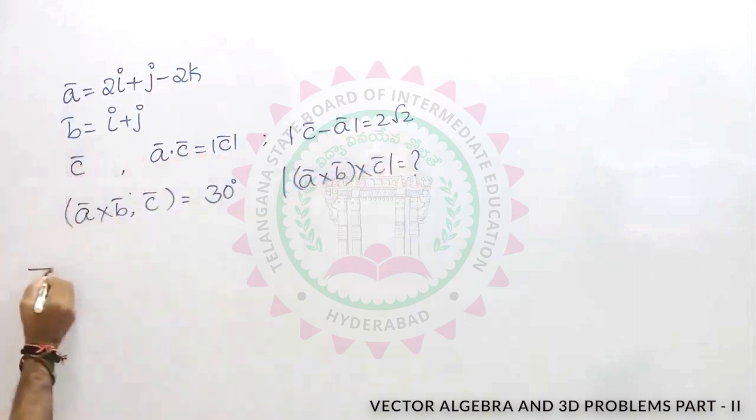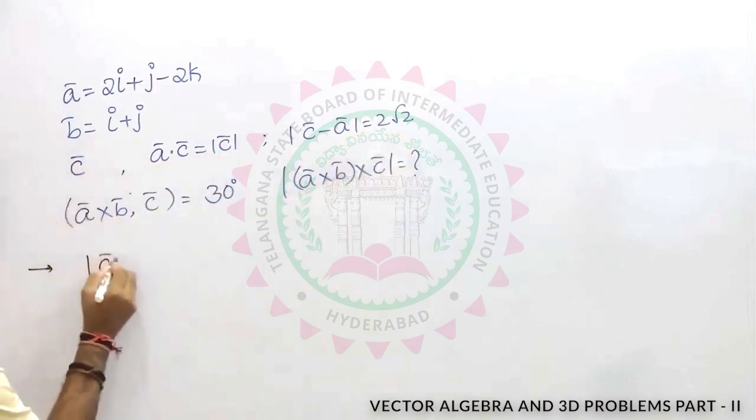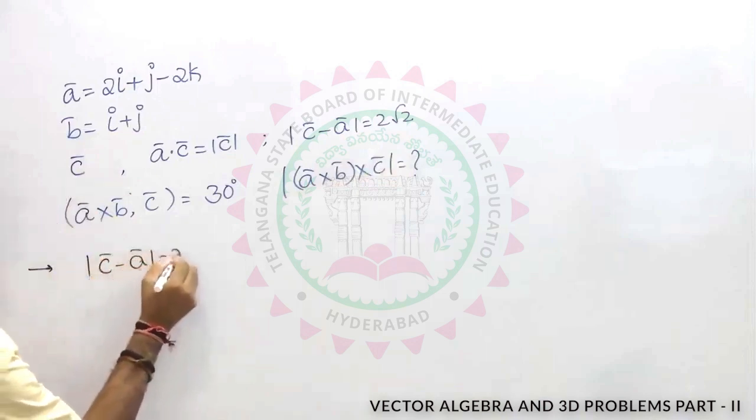First, I am taking that relation, modulus of c minus a is equal to 2 root 2. Squaring on both the sides.